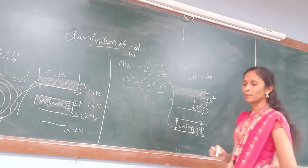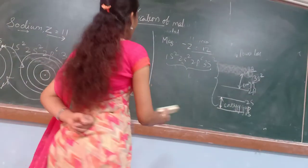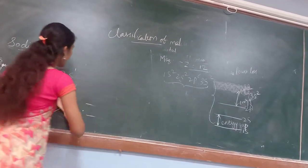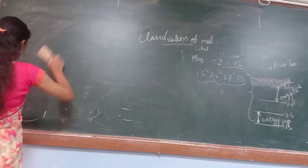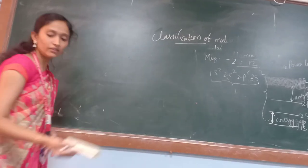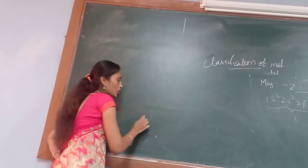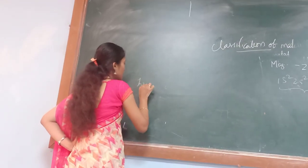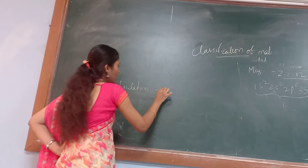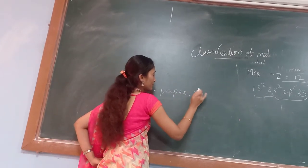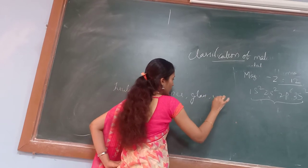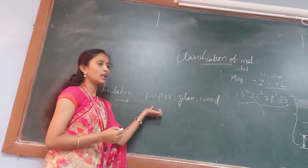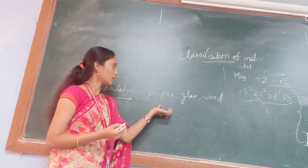For conductors, the energy gap is very less. When we give external thermal energy or an electric field, the flow of electrons takes place and they bond with another atom in the same state. Now let us see insulators. What does an insulator do? Insulator examples are paper, wood, and glass.